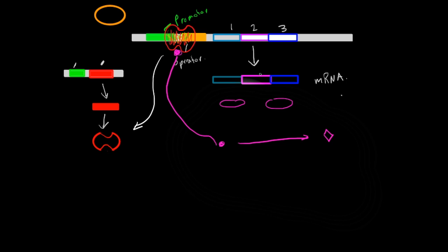the lactose operon is always a little bit active regardless of whether there is a repressor on it. So there's always a little bit of what's called allolactose being made that can remove this repressor and allow a mass production of beta-galactosidase which will break down lactose which is what the lactose operon is for.